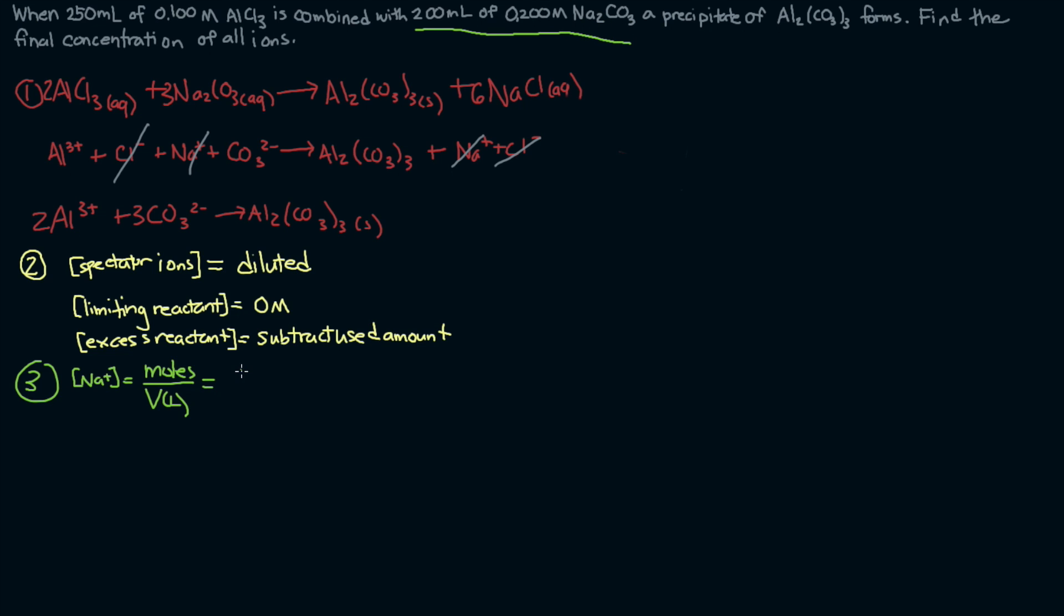To get the number of moles, we take our volume in liters, 0.200 liters, multiply that by our concentration, 0.200 molar, and also multiply it by a factor of two because there are two sodiums for every sodium carbonate. Then we divide that by the new total volume, 0.450 liters, and that gives us a concentration of 0.178 molar. There's our first answer.